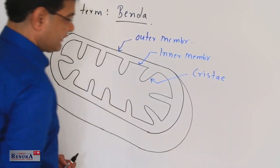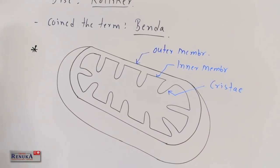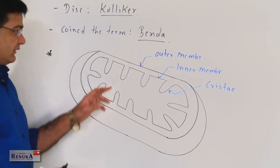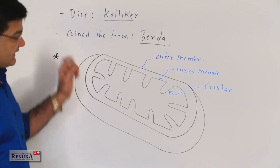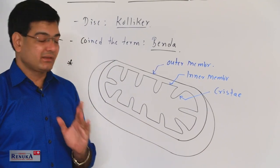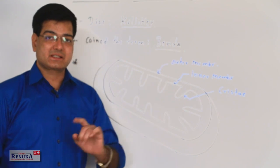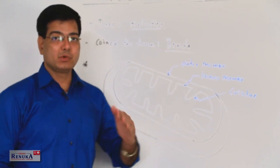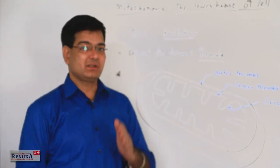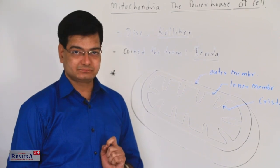The main part concerned with ATP synthesis is the cristae. The intensity of ATP synthesis depends on the density of cristae — more the cristae, more the possibility of ATP synthesis in the mitochondria.